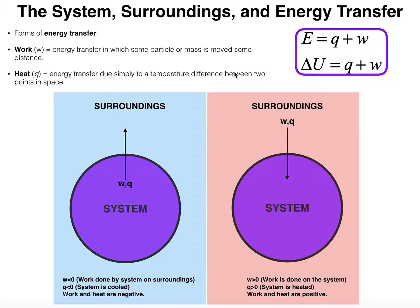One of the things we're also going to talk about is the total energy of our system. In general chemistry, the total energy of the system is given by the letter E, and what E is technically is the heat plus the work — the sum of these two things gives you the total energy of your system. In some general chemistry courses or in physical chemistry, E can be replaced with delta U, which means the exact same thing. Sometimes delta U is called internal energy, but it's basically just the total energy of the system: heat plus work.